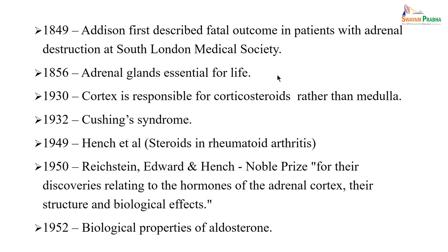Then researchers could understand in 1856 that the adrenal gland is essential for life. In 1930, people identified there is a cortical part, that is what we name as corticosteroid, rather than the medulla. In 1932, Cushing syndrome was described. In 1949, the steroid was first proposed for use in rheumatoid arthritis. In 1950, the Nobel Prize was given for discovery related to the hormone of adrenal cortex, its structure and biological effect. In 1952, biological properties of aldosterone were described.